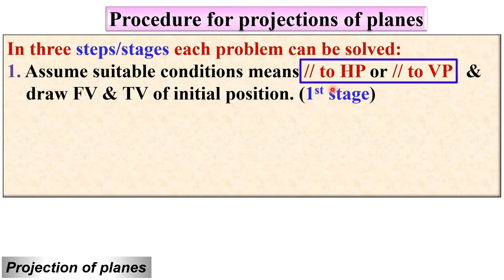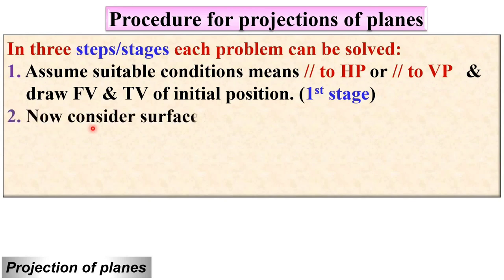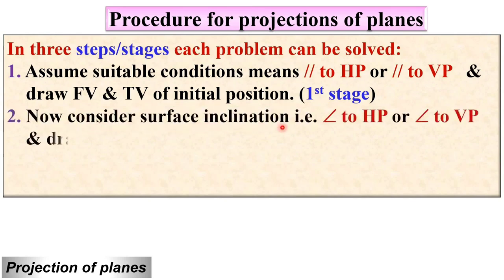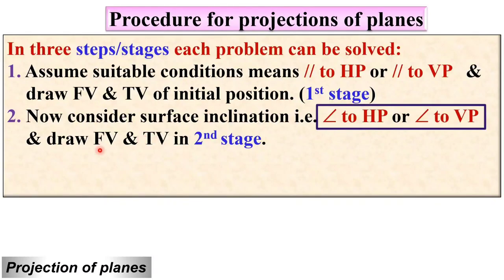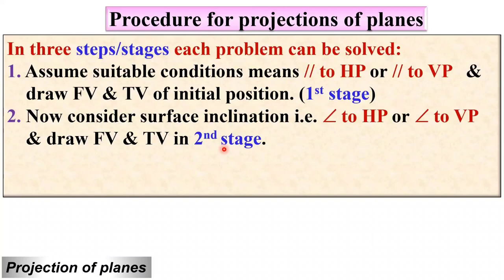In the first stage you have to assume the plane is either parallel to HP or parallel to VP. In the second stage you have to consider the surface inclination — that means the plane or surface is either inclined to HP or inclined to VP — and based on that you have to draw the front view and top view.